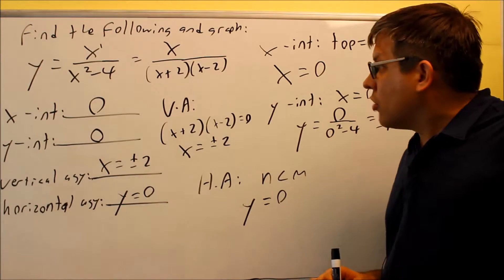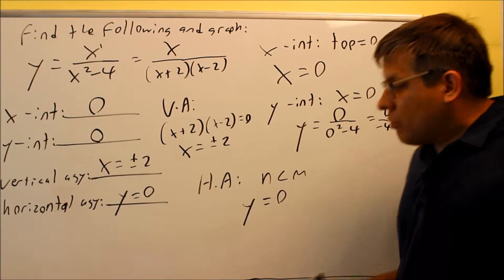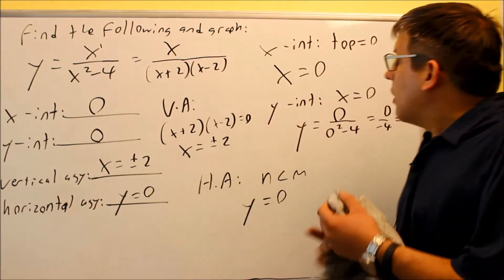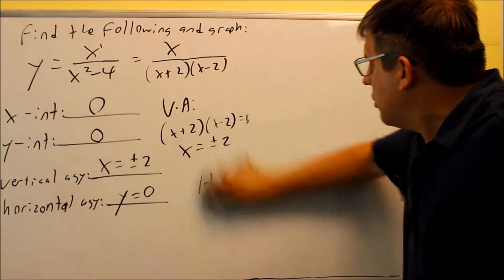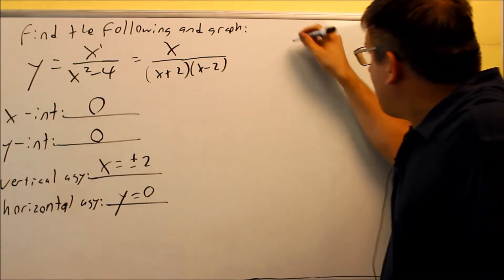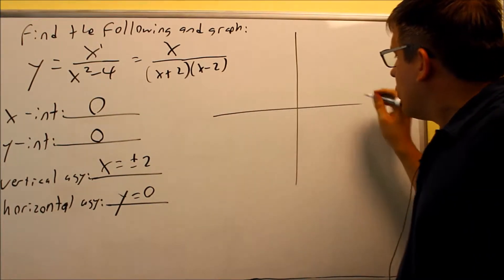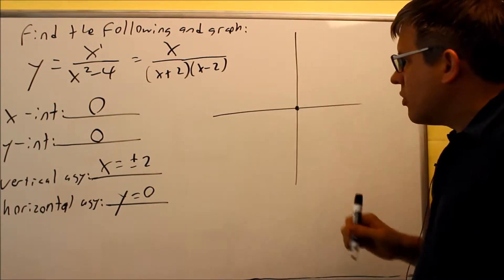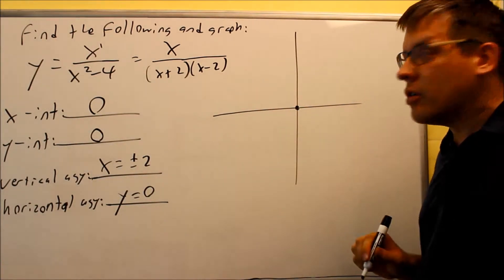So you want to make sure you get this information down, and I'm going to put the graph up. And we begin by plotting our 0, 0. We know it goes through 0, 0 there because of our intercept. That's our X and Y intercept.